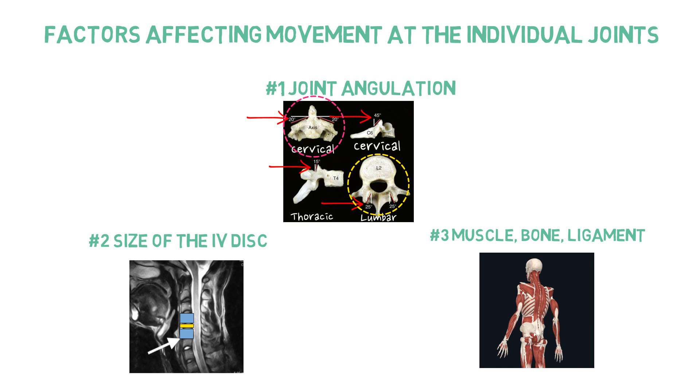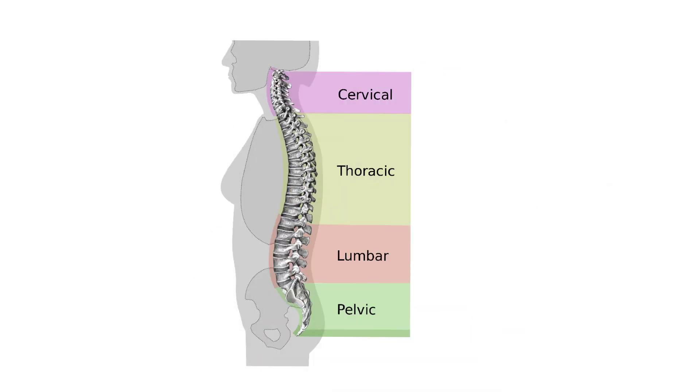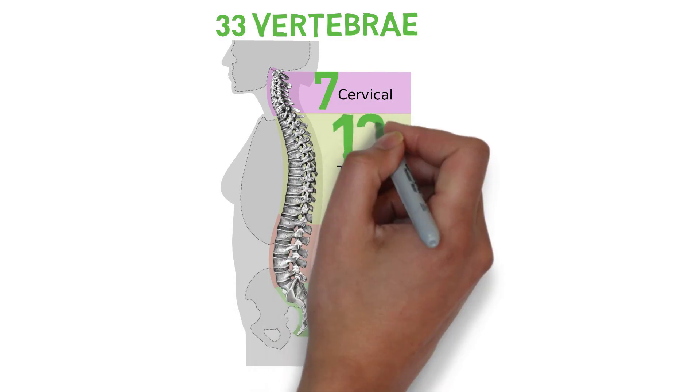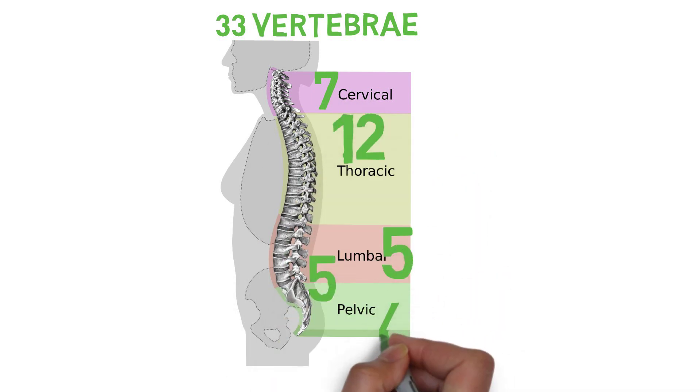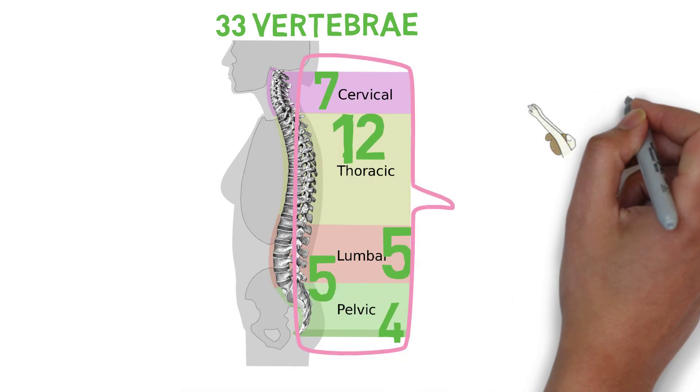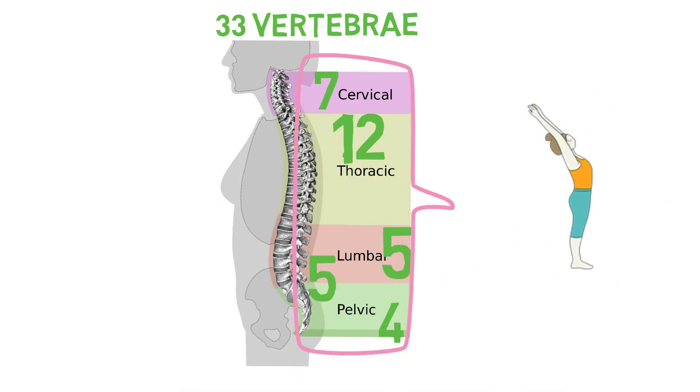Let's take a look at the vertebral column itself. It consists of 33 vertebral segments divided into 5 regions. There are 7 cervical, 12 thoracic, 5 lumbar, 5 sacral and 4 coccygeal segments. The combination of these regional movements creates the full range of motion in the body.